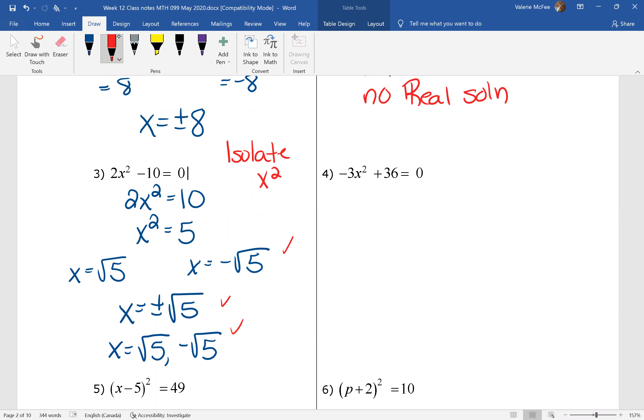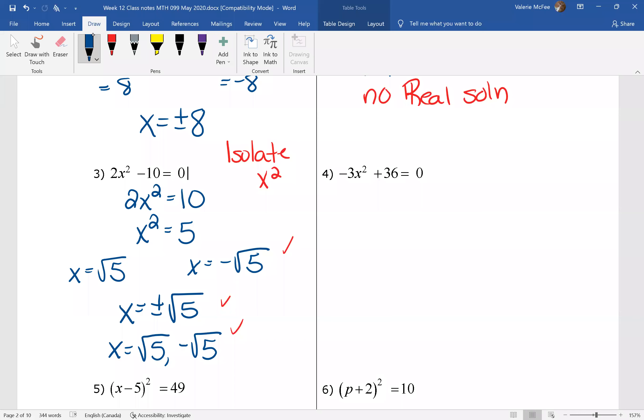Pause your video. Try question four. You subtracted 36 from both sides of the equation. You divided by negative 3. That's going to be positive 12. Now you have two equations.